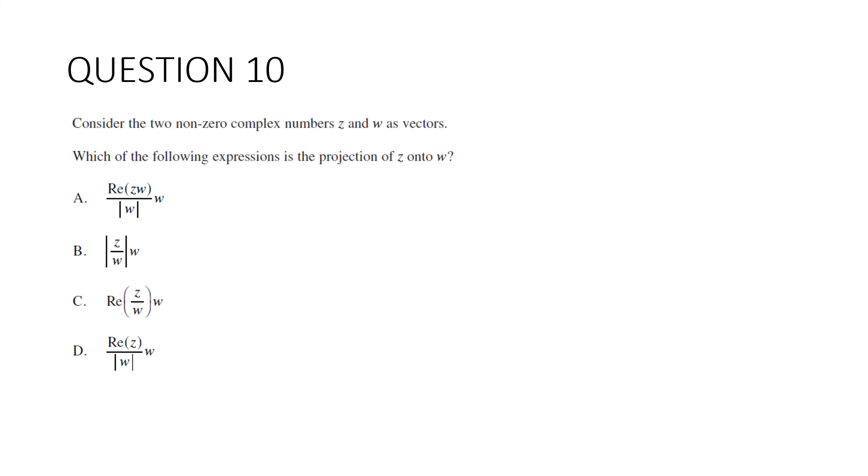Question 10. Consider the two non-zero complex numbers Z and W as vectors. Which of the following expressions is the projection of Z onto W? Quite a good question, this. I like it a lot. This is vector W and this is the vector Z. Now, remember, without having to remember any fancy formulas, if we call this angle theta, the projection of Z onto W is going to be cos theta times by W. Now, let's let Z equal E to the I alpha and W equal E to the I beta. And that makes this angle in here alpha take away beta. So our projection is going to become cos of alpha minus beta times W.